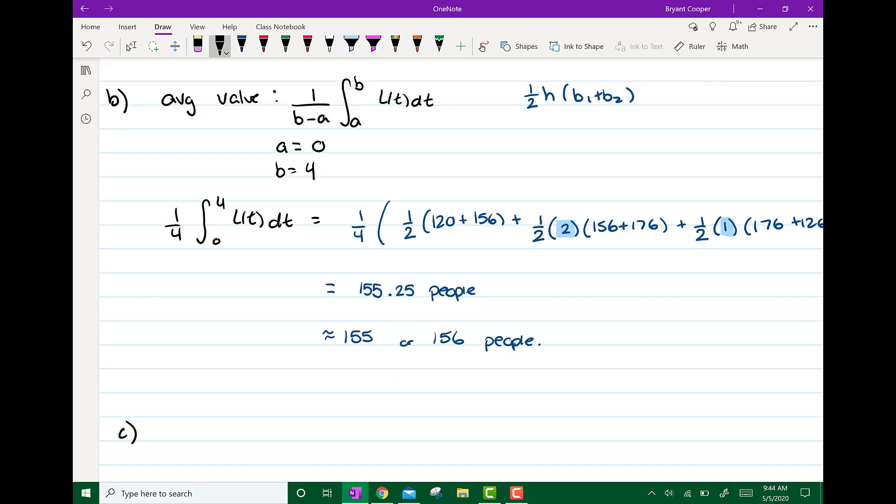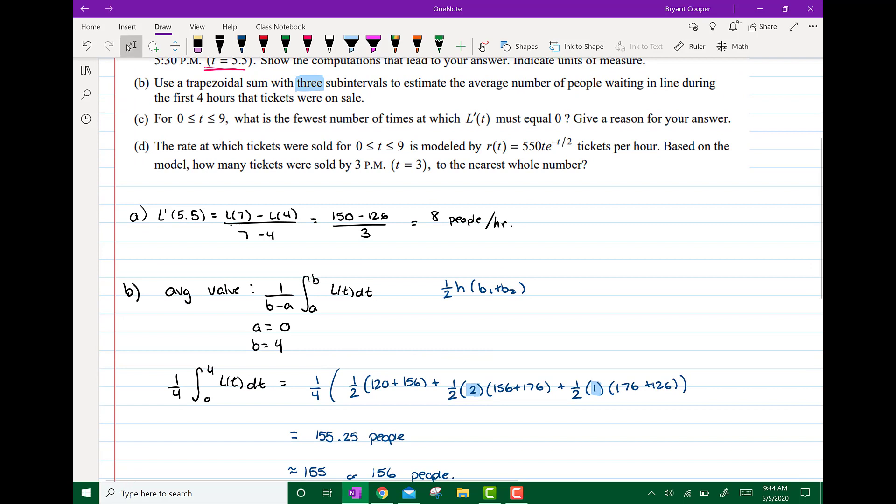Part C says for 0 to 9, what is the fewest number of times at which L prime of t must equal 0? Give a reason. So when I see this must equal 0, my brain should think IVT or MVT.